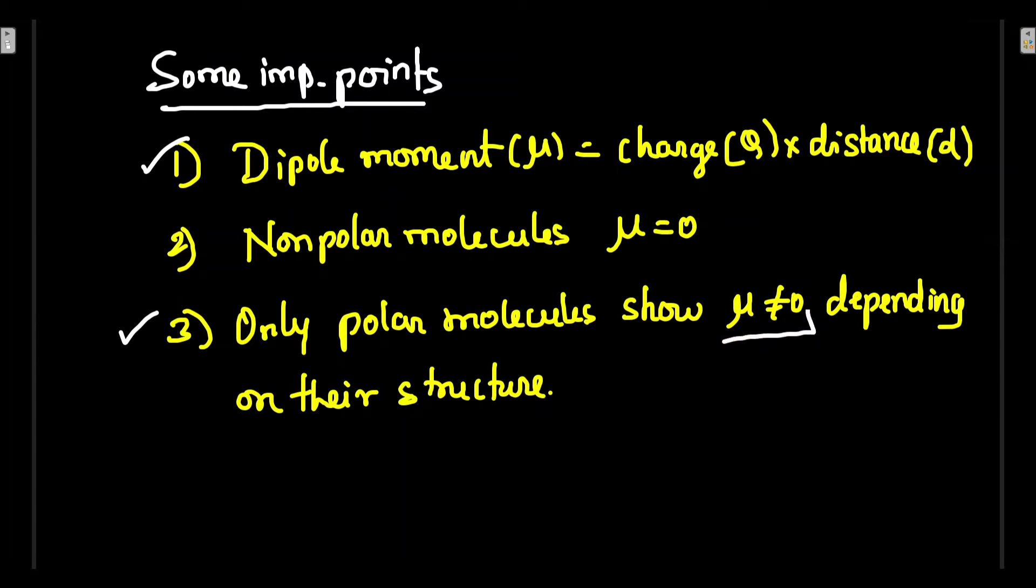If you take H and Cl, Cl will pull the electrons, there is a partial negative charge on Cl, partial positive charge on H. Then there will be a charge separation. You will take any one charge and multiply the distance between the charge separation, you will get the dipole moment.